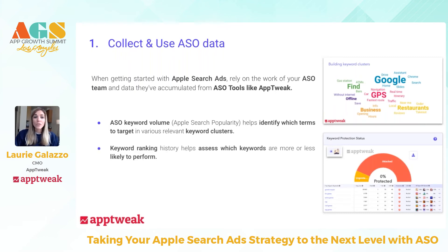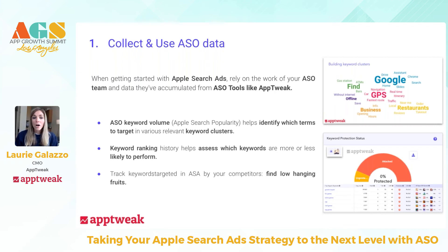You also want to identify with your teams which keywords you're actually ranking well for organically, because this can definitely help improve the efficiency of your Apple Search Ads campaigns. If you target keywords you already rank well for organically, you increase performance on your Search Ads side — the algorithm will favor you since you're doing well on one side. Lastly, you want to track keywords that are targeted by your competitors in Apple Search Ads. ASO tools like AppTweak can show you low-hanging fruit and keyword opportunities that competitors are currently targeting, giving you a great start for your campaigns.